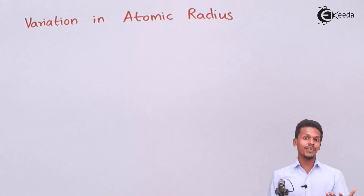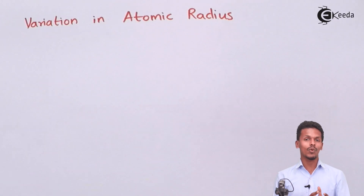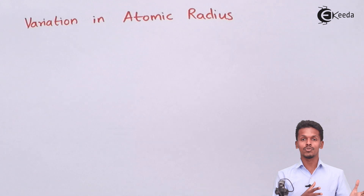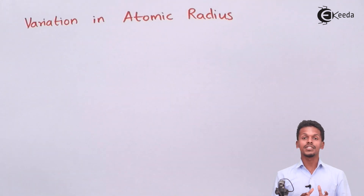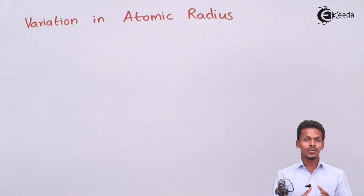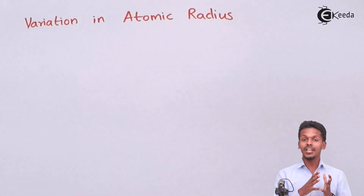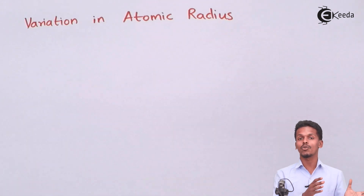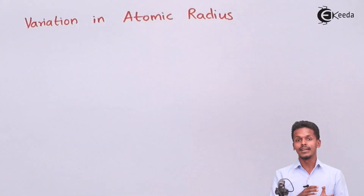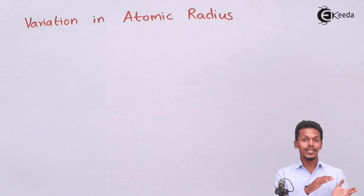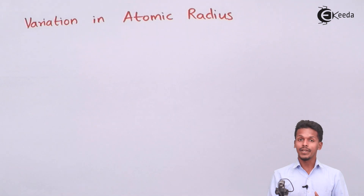Now what we are going to do is look at what are the variations of atomic radius that we are going to see in the periodic table. So when we talk about the periodic trend for atomic radius, it has been observed just for the period and the groups.